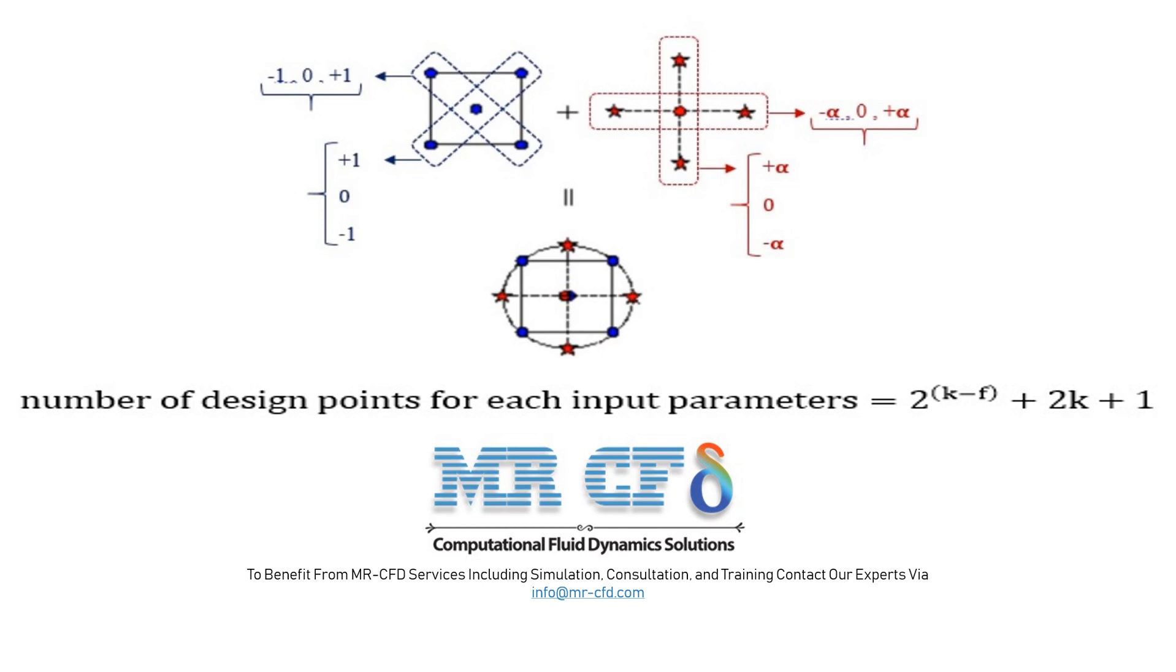This figure shows an example of a model with two input parameters. The midpoint is the same level zero which indicates the same state that all parameters have the mean value. The red star points of the level positive alpha and level minus alpha are the same maximum and minimum points related to the two factors that are equivalent to the term 2k equal to 2 times 2 equal 4.